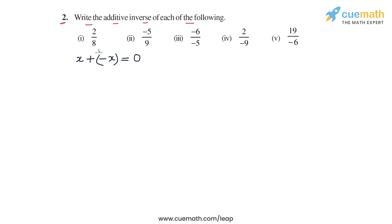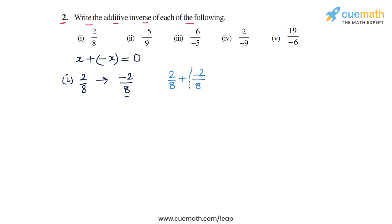So all we have to do is find the additive inverse, or the negative, of each of these rational numbers. In the first part, the rational number is 2/8. So the negative of 2/8 will be -2/8, and this will be the additive inverse of 2/8. We can verify: if we take 2/8 and add it to -2/8, the numerators will add to zero, and we will get zero.